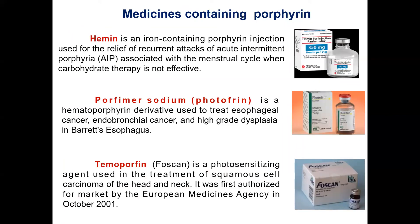A number of porphyrins and various derivatives are used clinically for the treatment of various diseases. For example, hemin is an iron-containing porphyrin injection used for the relief of recurrent attacks of acute intermittent porphyria. Due to the photodynamic properties of porphyrins, they are used in cancer phototherapy. When porphyrins are exposed to light of 630 nanometers, they become excited and react with molecular oxygen to produce oxygen radicals. These radicals injure lysosomes and other cellular organelles, causing the lysosomes to release degradative enzymes which cause damage to cancer cells.